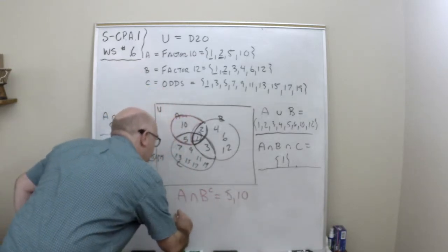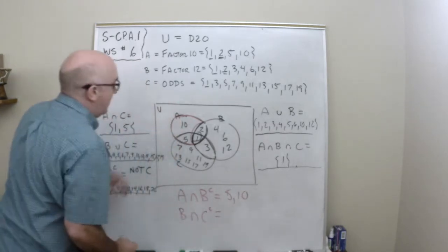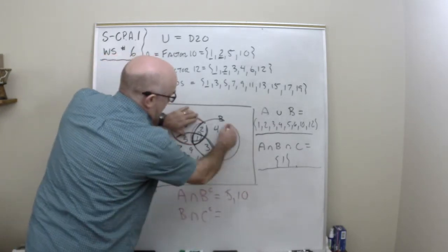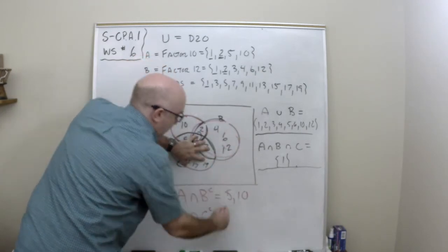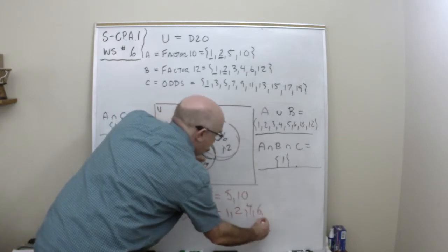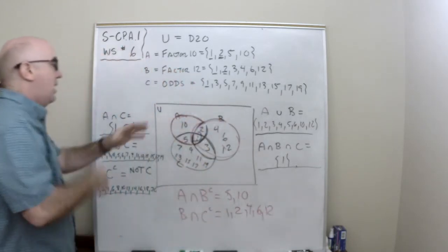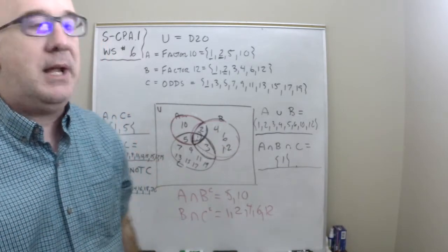Where are the things that are in B and not in C? So things that are in B, these things right here, but can't be in C. So that would be the 1, 2, 4, 6, and 12. Lots of things going on there, but the Venn diagram helps you to organize it and keep it in place.